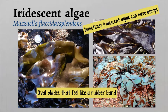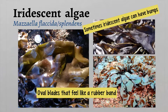Iridescent algae have large oval-shaped blades and can appear dark purple, greenish, or brown. They can also have reproductive bumps on the blades, which occurs seasonally. If you touch it and pull it gently, the blade should bounce back like a rubber band. Fun fact: the light provides this algae's surface with its brilliant iridescence, sometimes looking like a rainbow. A word of caution when you're out in the intertidal — this is definitely an algae you want to avoid walking on because it can be very slippery when wet.